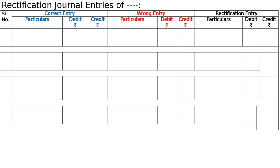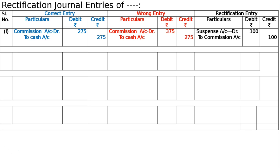The correct entry is: commission account debited to cash account ₹275. By mistake, commission account was debited ₹375. Hence the rectification entry is: suspense account debited to commission account ₹100, because commission account was by mistake excess debited by ₹100. Crediting commission account by ₹100 rectifies it. Narration: commission account excess debited by ₹100, now rectified.